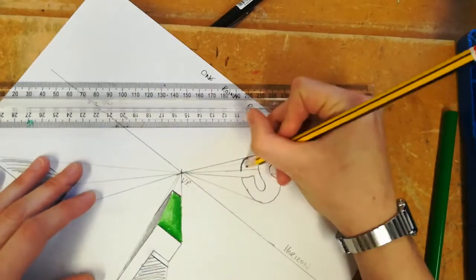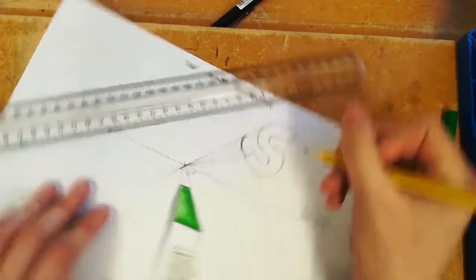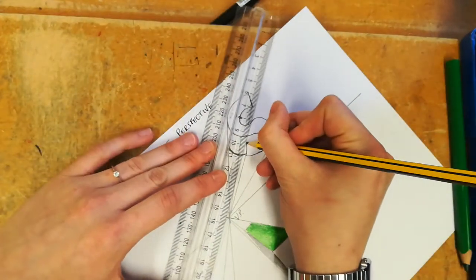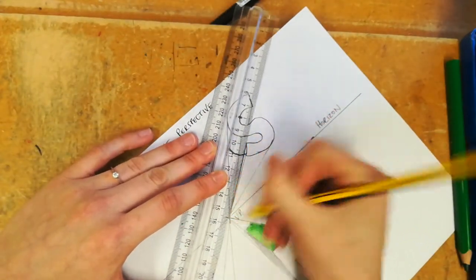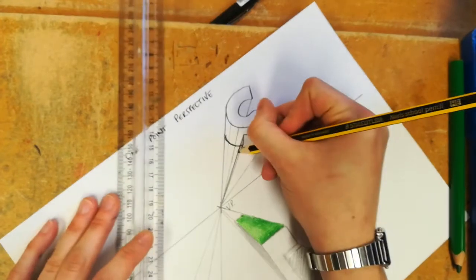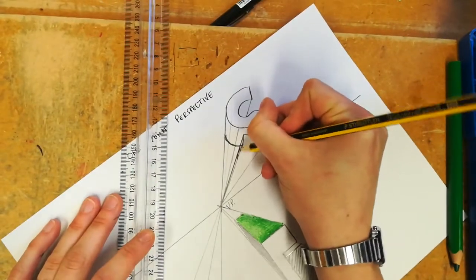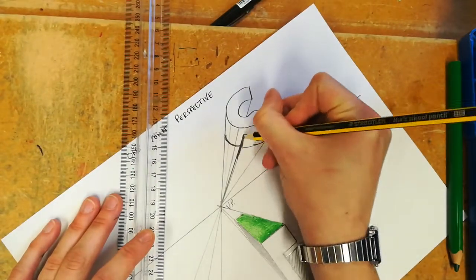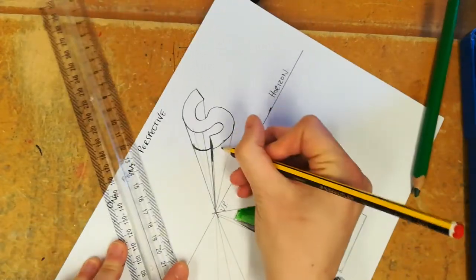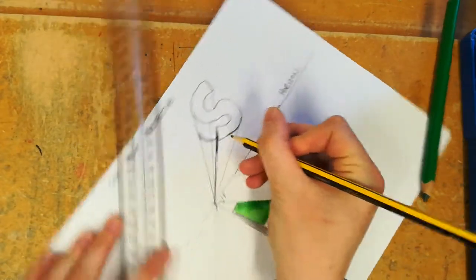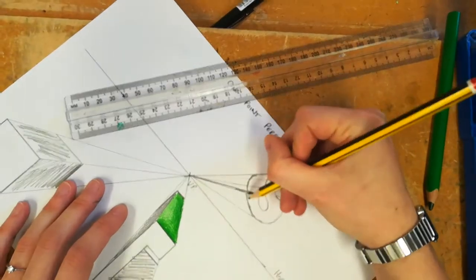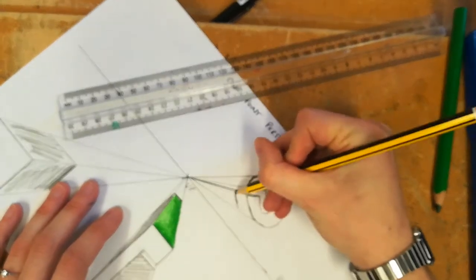It would disappear. Anything here at the front would be parallel at the back. Shade that in because that's quite a small section. Anything at the front here would be parallel at the back.